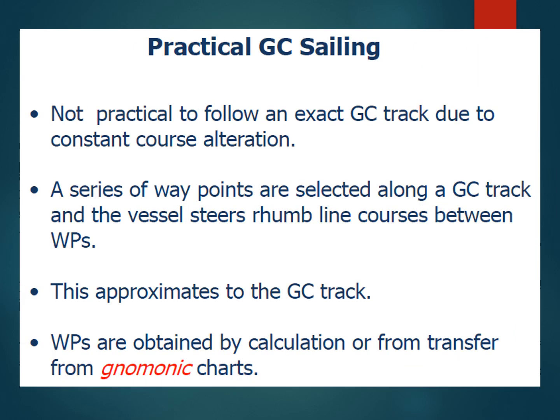It is not practical to follow an exact great circle track. Mariners commonly use Mercator charts because they are more readily available, available in all scale sizes, and cover pretty much all areas. Gnomonic charts, on which great circles can be drawn as straight lines and used for navigation, are much fewer in number and mainly small-scale charts covering large geographical areas. Because they are small scale, they do not show dangers to navigation, landmasses, small islands, or wrecks, so they cannot be used for navigation.